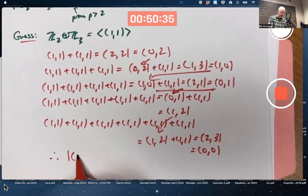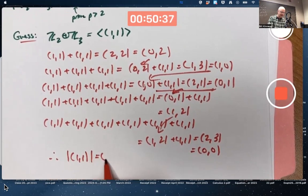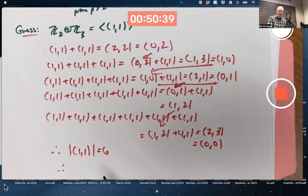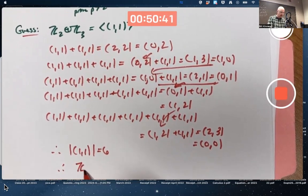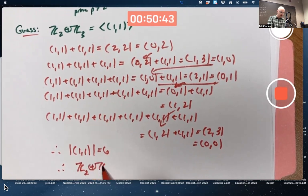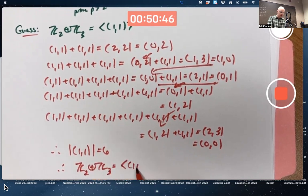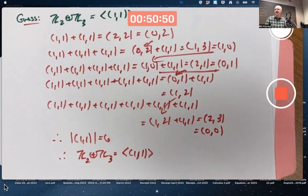Therefore, the order of (1,1) is 6, and therefore, since the order of Z2 external direct product Z3 is also 6, it must be a generator. You can also just see it generates every element.